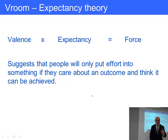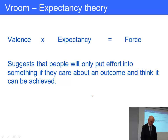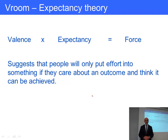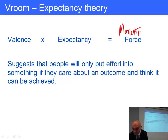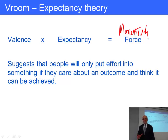Both Maslow and Herzberg were content theories — saying basically what's in the job that will motivate you. We come now to Vroom and expectancy theory, which is a process theory of motivation. This tries to work out the mental process you go through to become motivated, and Vroom expresses it in the form of an equation. The force here is the motivating force — how strongly are you going to be motivated? Vroom says you go through a kind of mental calculation to decide how motivated you're going to be.